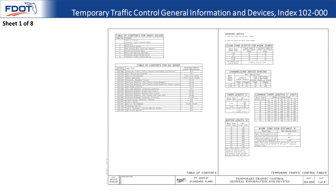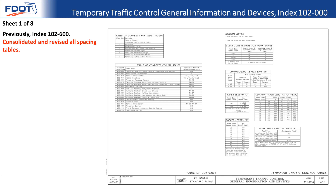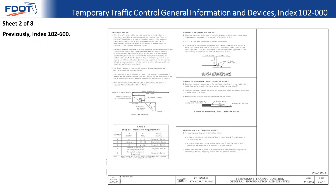Looking at sheet one of eight for index 102-000, the device tables are on the right with the work zone sign distance and the channelizing device spacing. There is also a complete table of contents for the series.